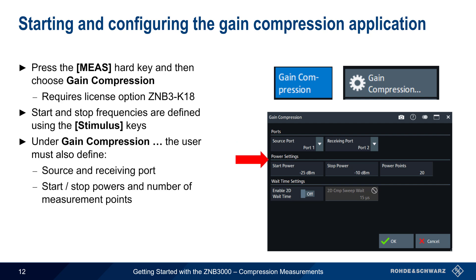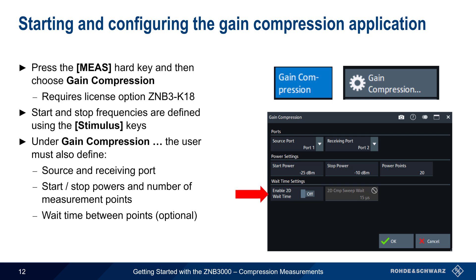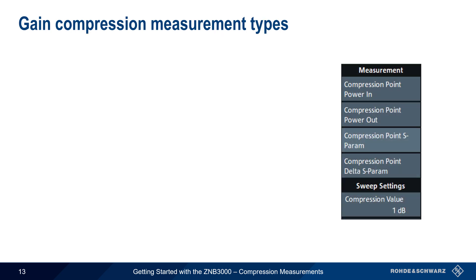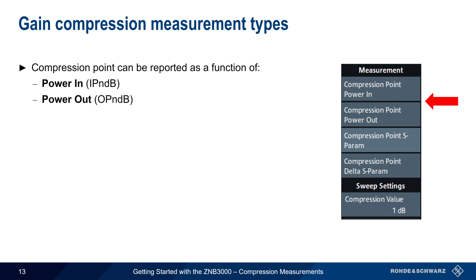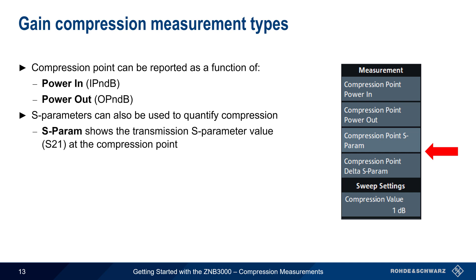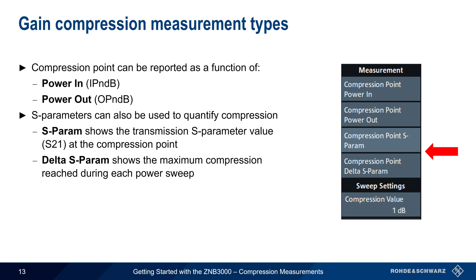Additional parameters include the start power, stop power, and the number of measurement points over this range. An optional wait time can also be configured between each measurement point. The ZMB3000 can display compression sweep results in four different ways. The two most common are Input Power Compression Point and Output Power Compression Point, showing the input and output compression points as a function of frequency. The other display options use S-parameters: Standard S-Parameter results show the transmission S-parameter value S21 at the compression point, while Delta S-Parameter shows the maximum compression reached during each power sweep, which will usually equal the user-configured compression point value.